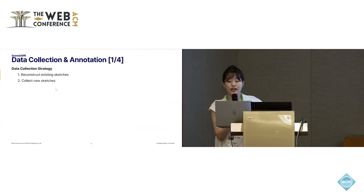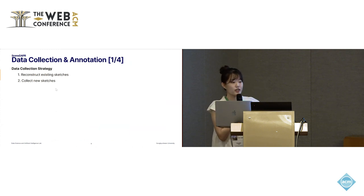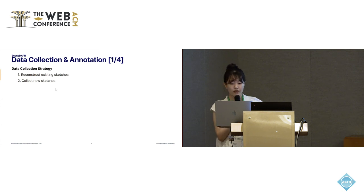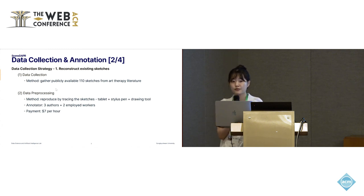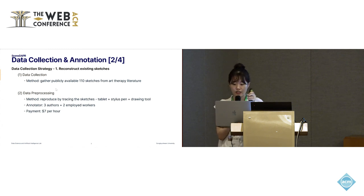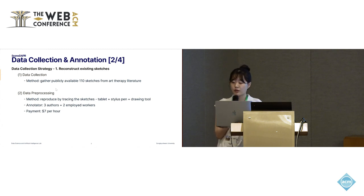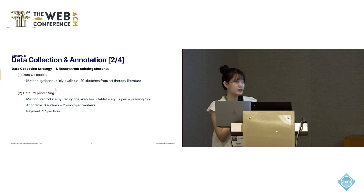To collect diverse sketches for DAPR assessment, we employed two approaches: reconstructing existing sketches and collecting new sketches. For reconstructing existing sketches, we gathered publicly available drawings from art therapy literature and reproduced them by tracing through a digital drawing tool and tablet with stylus pen, since the obtained sketches do not contain sequential stroke information. Five annotators traced them exactly the same by adding layers.